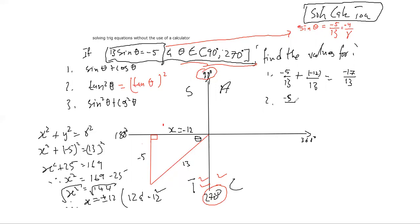Opposite is minus 5, adjacent is minus 12. So tan squared means we must square everything, so this should be 25 over 144. I don't think that can be simplified any further because the highest common factor between those two is 1.